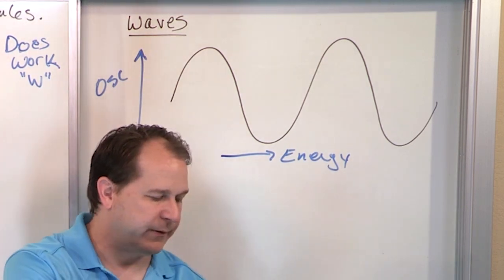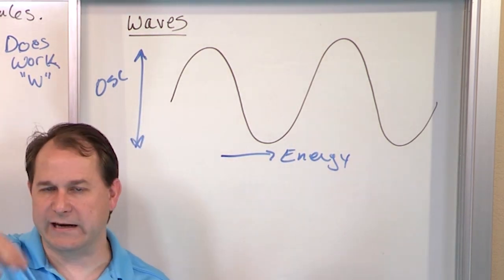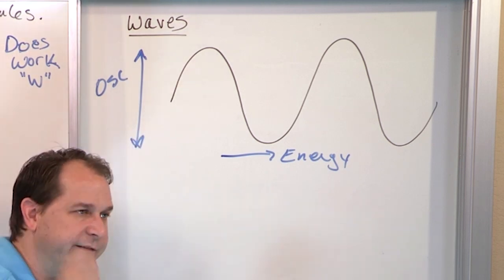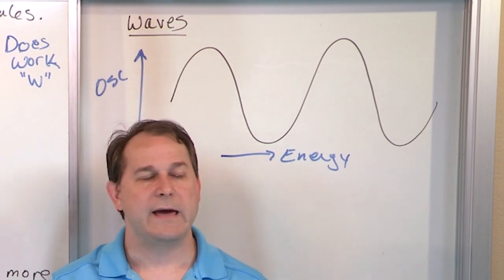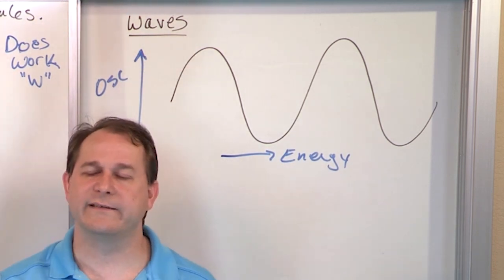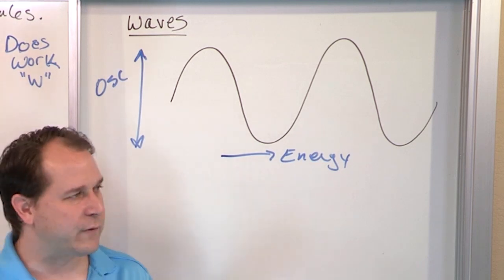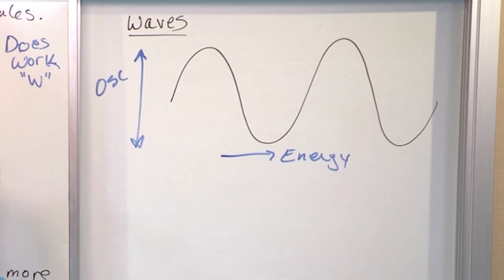So you can also see this with a rope. If I take a rope and I tie it to the wall or I get my friend to hold it and I got the other end, I can start oscillating it up and down and it's going to start to propagate along the rope and it's going to hit my friend's hand. And if I shake it hard enough, his hand's going to start wiggling because I'm taking energy from my hand, transmitting it through a wave, hitting my friend. And so I can use this kind of wave to transmit energy.